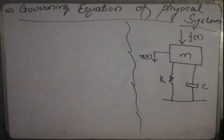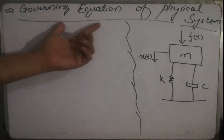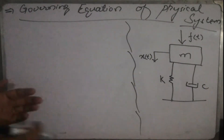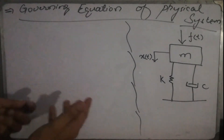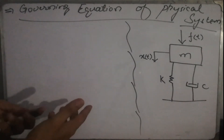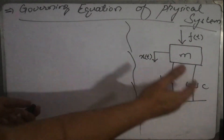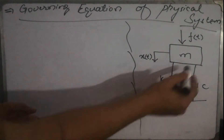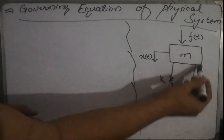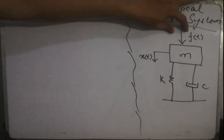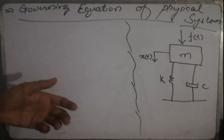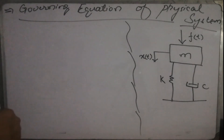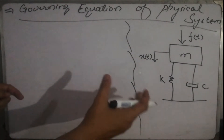Hello and welcome back to MEC UAT. In this lecture we will be going through a step-by-step procedure of deriving the governing equation for a physical system. In this case we will be dealing with a simple mechanical physical system, where we have a mass attached to a spring and a damper. A force is applied as an input, which is a function of time, and we are getting the displacement as a result, which is x of t.